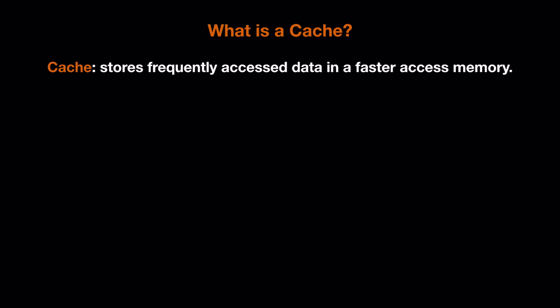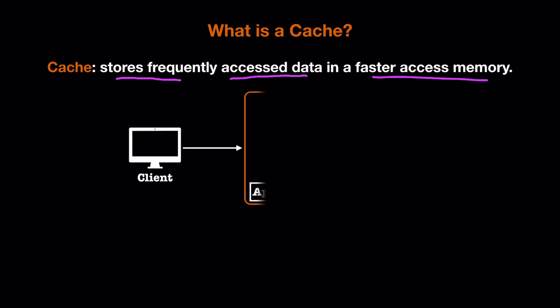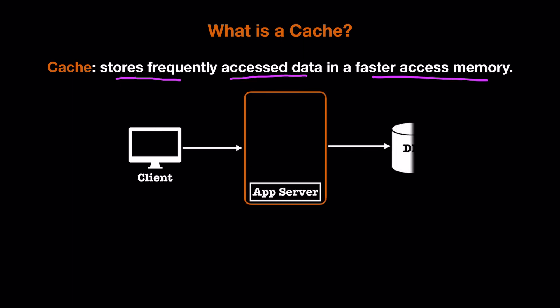In this video we will talk about caching — almost everything about caching we need to know before a system design interview. A cache stores frequently accessed data in a faster access memory. For example, we have a client requesting data from our app server; the app server sends the request to a data server, runs a query in the database, and returns the result to the customer. If we have a million customers requesting the same data, we will still be making a million calls to our DB server.